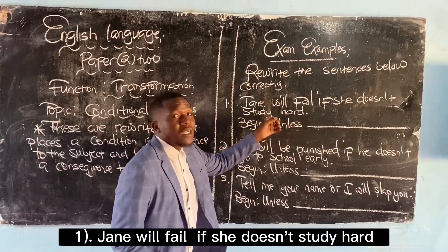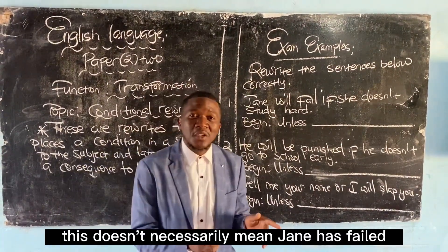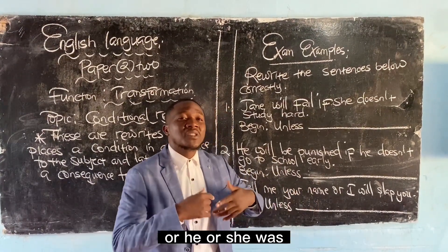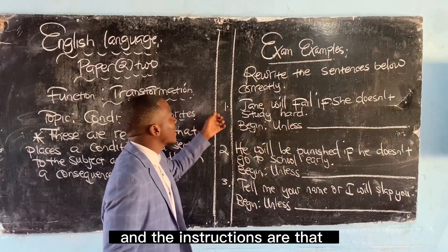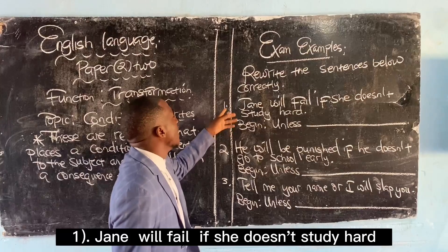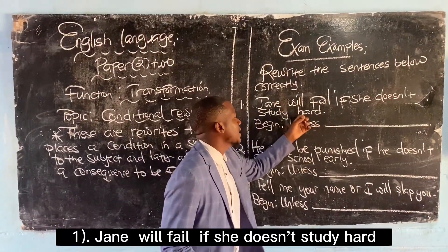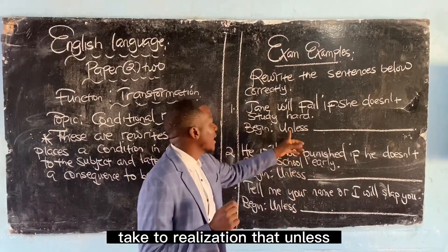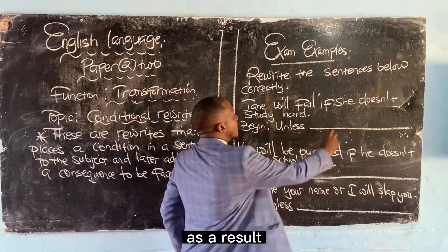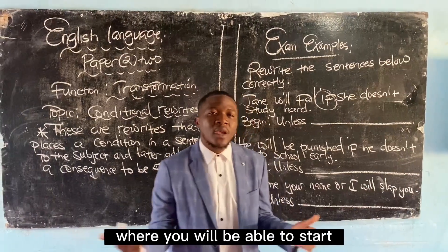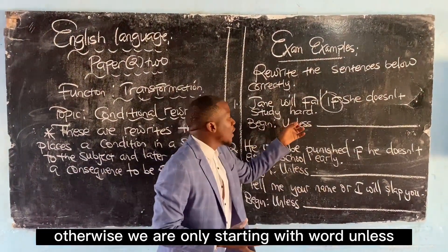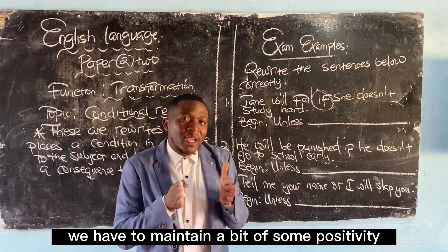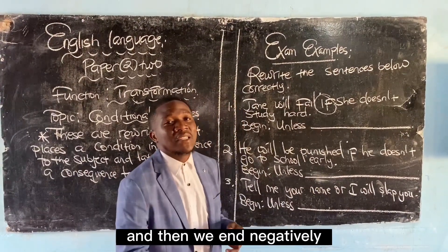Jake will fail if she doesn't study hard. This doesn't necessarily mean Jake has failed — suppose these are exams, it's advice based on Jane's character. The instruction is to rewrite the sentence beginning with 'unless.' When you encounter the word 'unless' in a sentence, take to realization that 'unless' takes the position of the word 'if.' As a result, there is no sentence under grammar or English where you will start with 'unless if.' We are starting with 'unless' because it is supposed to replace 'if.'